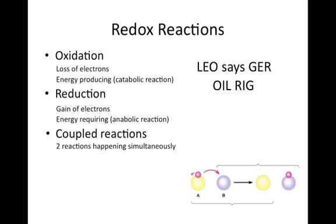This diagram illustrates the idea of a coupled reaction. Initially, molecule A has an electron and molecule B doesn't. In the reaction, however, B takes the electron away from A, leaving A without it. Because A loses an electron, the reaction of A with an electron to A without an electron is an oxidation reaction. Because B gains an electron, the reaction of B without an electron to B with an electron is a reduction reaction.